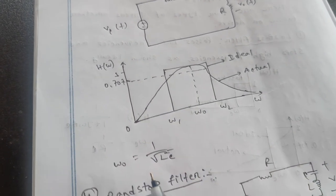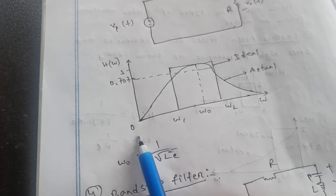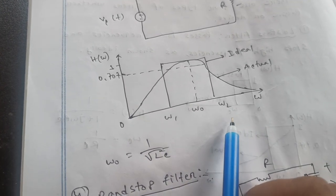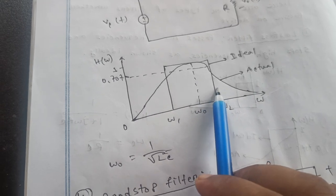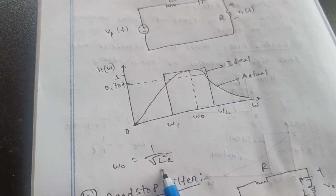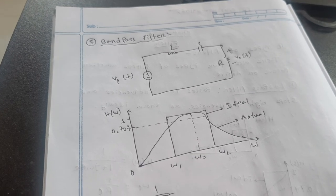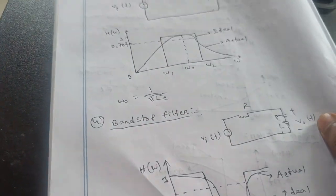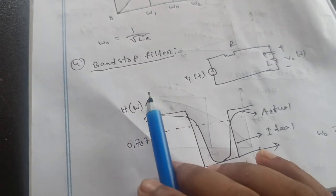And its graph is 0 and omega 1, omega 0 and omega 2. Then ideal factor and actual factor. That means omega 0 equal to 1 by root over LC. Actual band pass filter. It's called band pass filter.